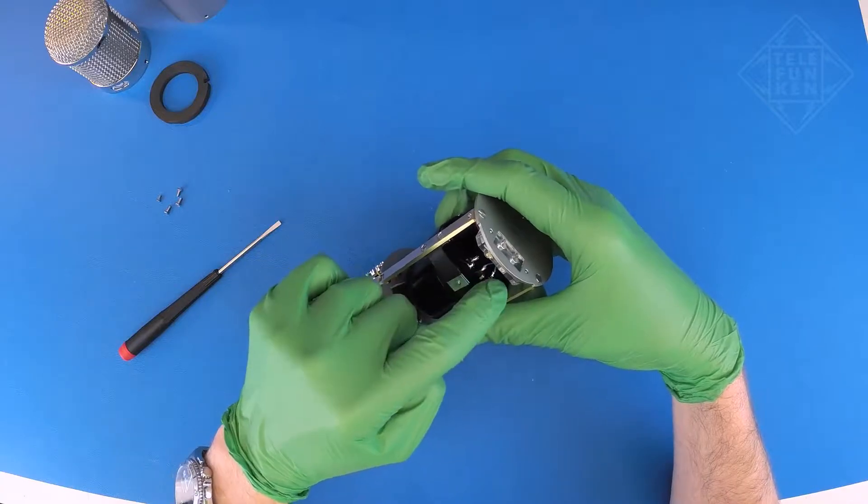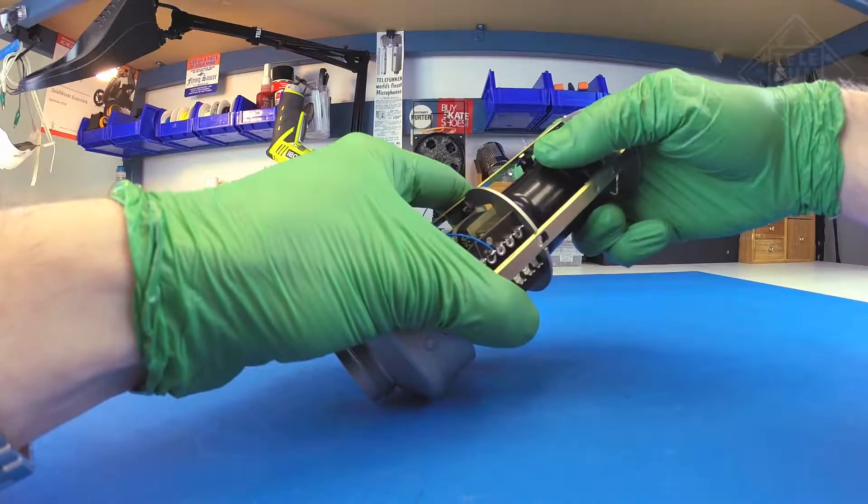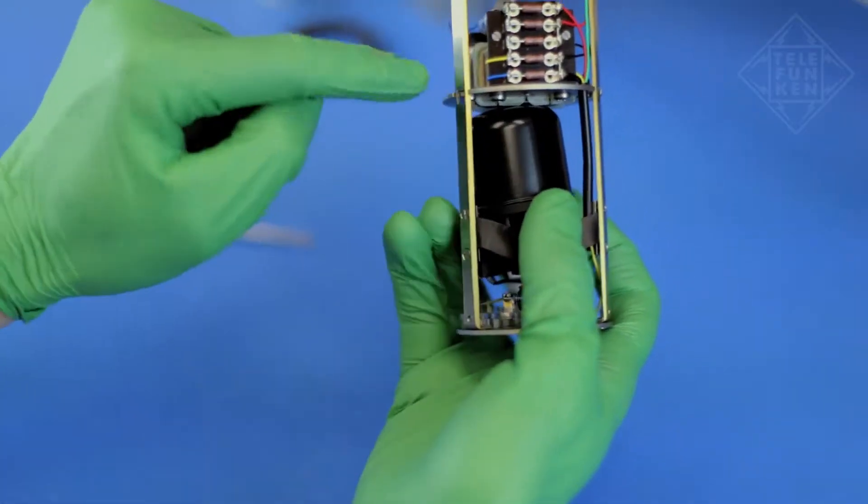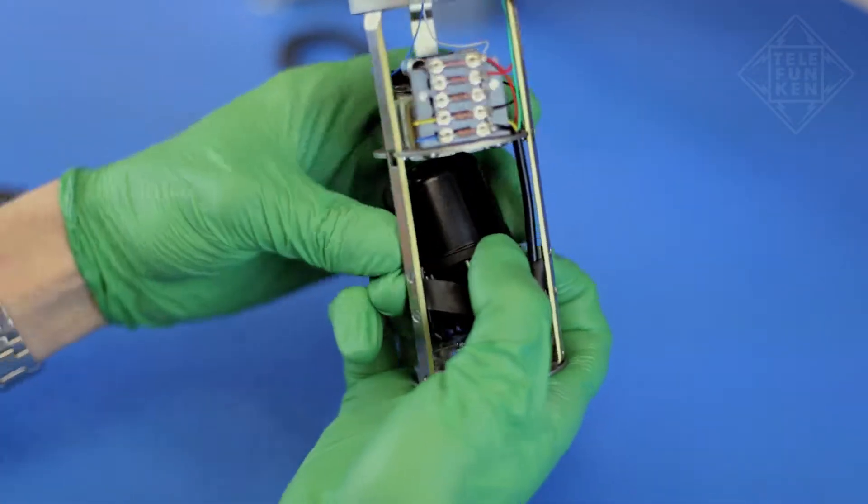Locate the three contacts on the tube socket. Angle the tube socket outward by holding these contacts with one hand. Pull down on the tube with the other hand.